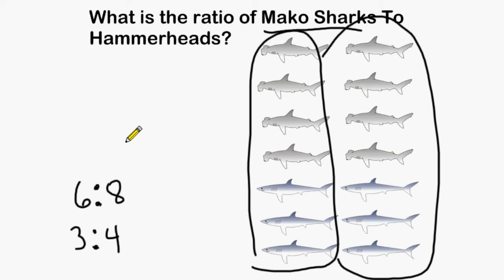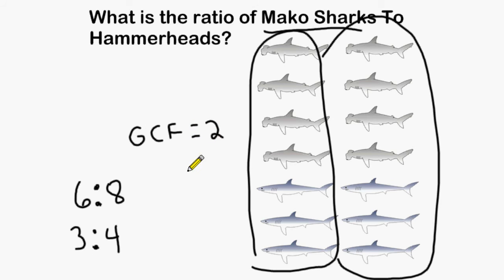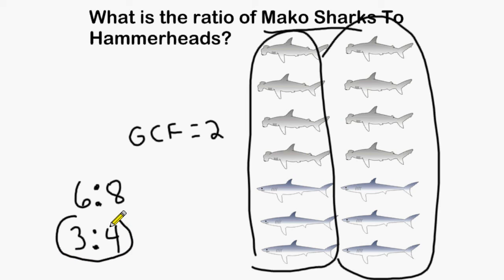The number of groups that is created will also be equal to the GCF that was divided into your original 2 numbers. Because the GCF of 6 and 8 is equal to 2, we can make 2 identical groups each having 3 mako sharks and 4 hammerhead sharks. So our final answer is 3 mako sharks for every 4 hammerhead sharks.